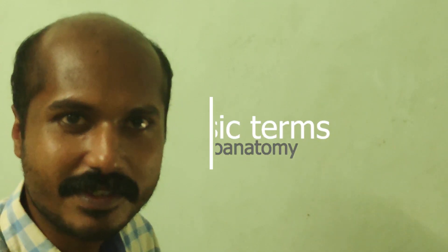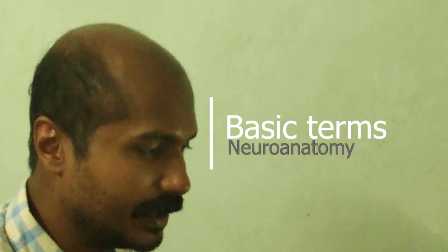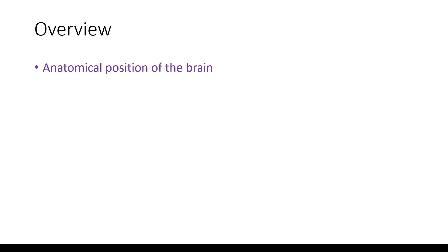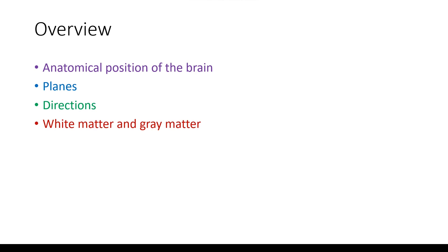Hello. Today we'll learn some basic terms that we use to learn neuroanatomy. We'll cover this under the following headings: how to hold the brain in the anatomical position, the planes we use to study brain sections, the terms for anatomical directions, and then white matter and grey matter — where you have each in the brain.